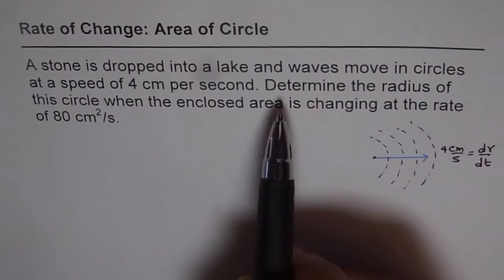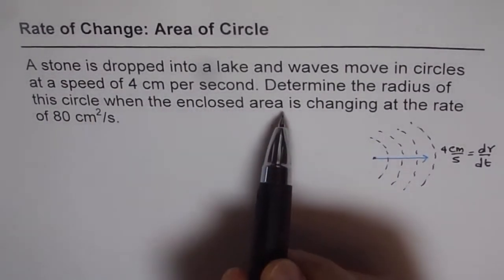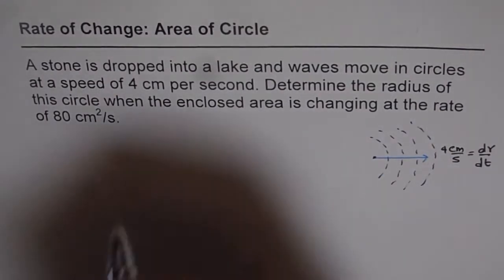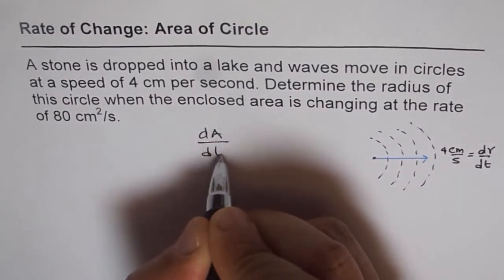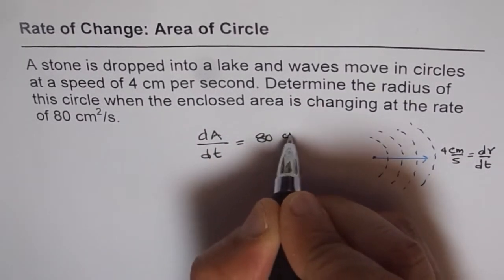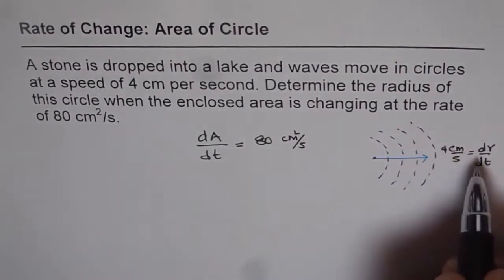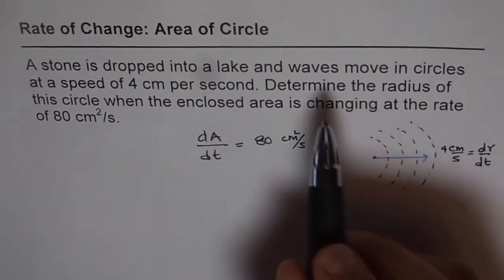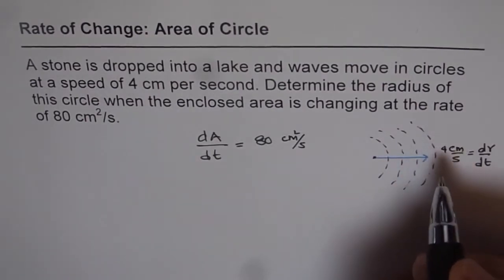Now it says determine the radius of this circle when enclosed area is changing at the rate of 80 centimeters square per second. We are saying that enclosed area dA/dt changes at the rate of 80 centimeters square per second, and we are also given that radius is changing at this rate. What do we need to find? Determine the radius when this happens. Let's relate area with radius first and then differentiate with respect to time.